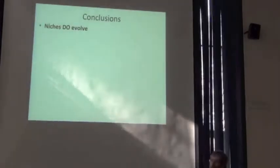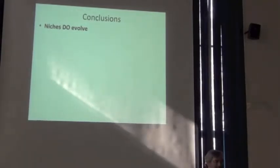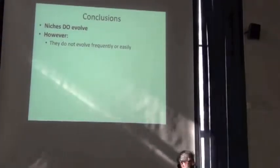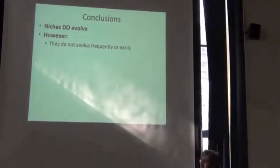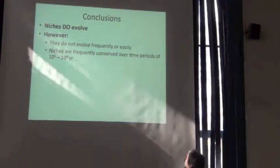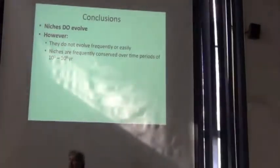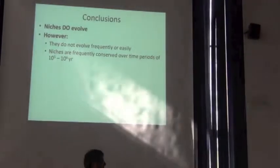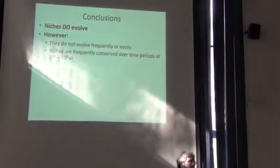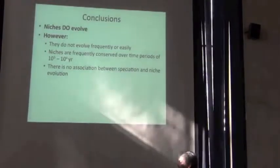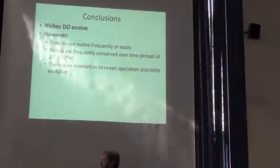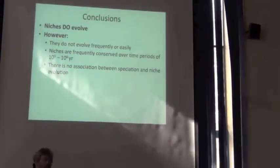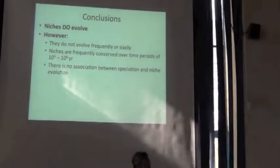So, where do we come out of this? Niches do evolve. However, they don't evolve terribly easily, quickly, at least given the weight of evidence so far. At least for vertebrates and the invertebrate examples that we've looked at so far, they're frequently conserved out to hundreds of thousands of years and even in the low numbers of millions of years. We don't see any evidence for associations between speciation and niche innovations, so no overriding evidence for what's called ecological speciation.